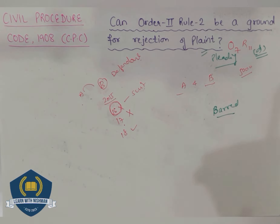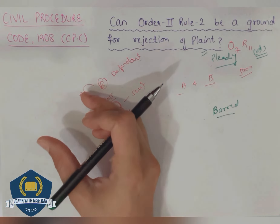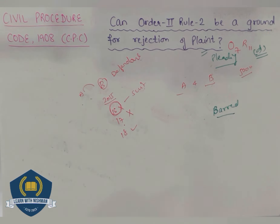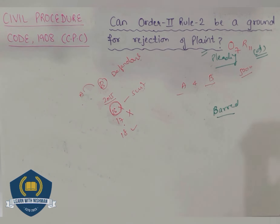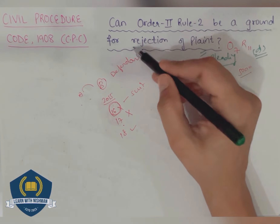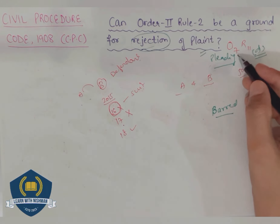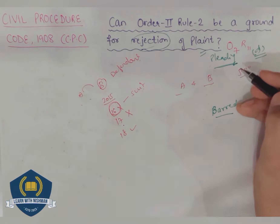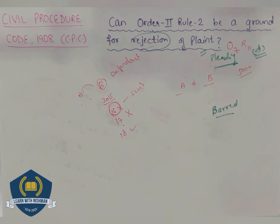Order 2 Rule 2 can never be proved without proving documents — you have to give evidence. The plaint, documents, and witnesses from the previous suit all have to be proved. To prove Order 2 Rule 2, we have to give evidence. Only on the basis of pleadings, the bar under Order 2 Rule 2 cannot be proved, and hence the plaint cannot be rejected. If it requires evidence, it is not a rejection of plaint under Order 7 — it will always be a dismissal of suit.